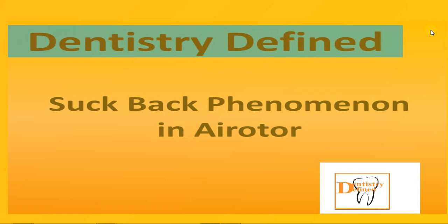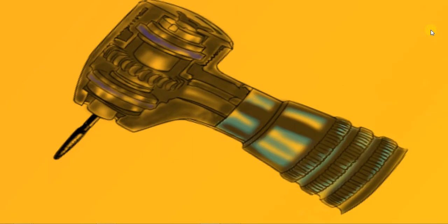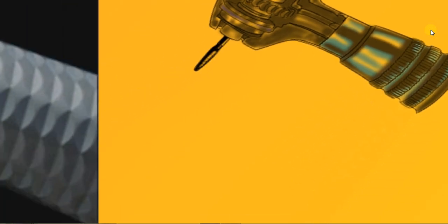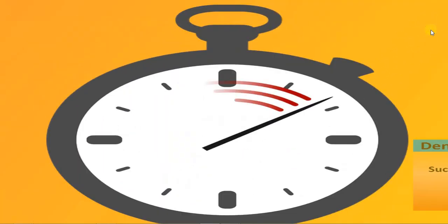The air rotor rotates by air with the help of an impeller inside the head of the handpiece. When we release the pedal, the air moving inside the air rotor is stopped — air is no longer supplied to the impeller. Still, it will continue to rotate inertially for a few seconds, then it stops rotating completely.